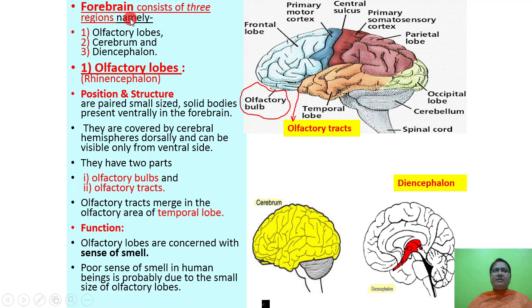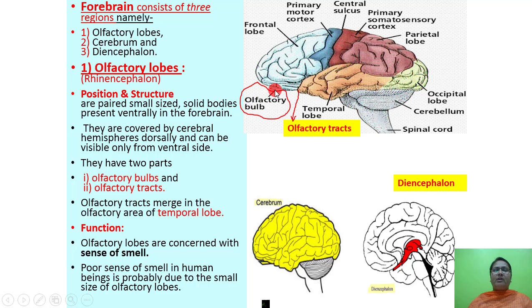The forebrain consists of three regions: first, olfactory lobes; second, cerebrum; and third, diencephalon. The olfactory lobes, or rhinencephalon, are paired small-sized solid bodies present ventrally in the forebrain. They are covered by the cerebral hemispheres and can be seen from the ventral side. They have two parts: olfactory bulbs and olfactory tracts.